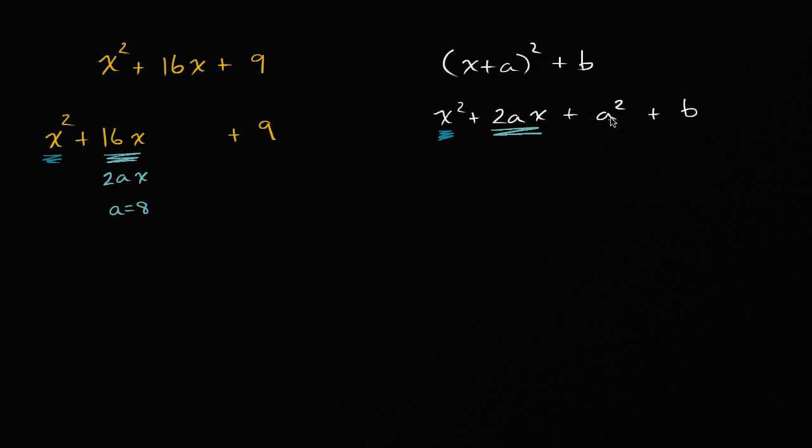And so if I want to have an a squared over here, well, if a is eight, I would add an eight squared, which would be a 64. Well, I can't just add numbers willy-nilly to an expression without changing the value of an expression. So if I don't want to change the value of the expression, I still need to subtract 64. So notice, all that I have done now is I just took our original expression, and I added 64, and I subtracted 64. So I have not changed the value of that expression.